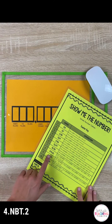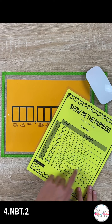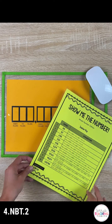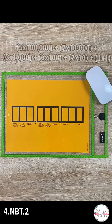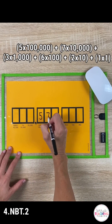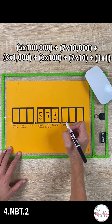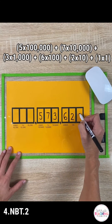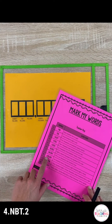In the next example, provide students with the expanded form of a number and have them write the number in standard form. The number shown in expanded form converts to 573,621 in standard form.